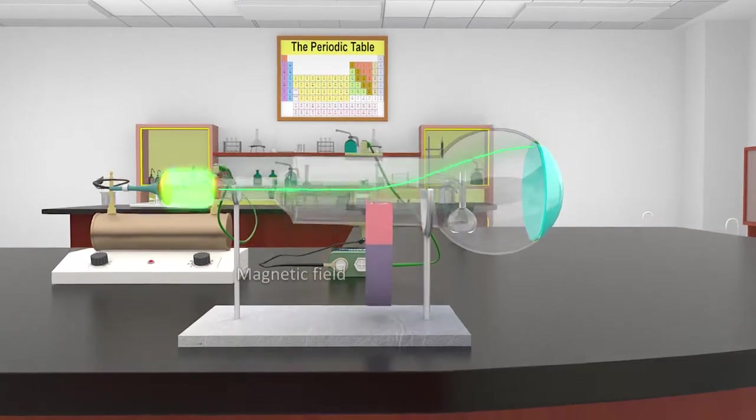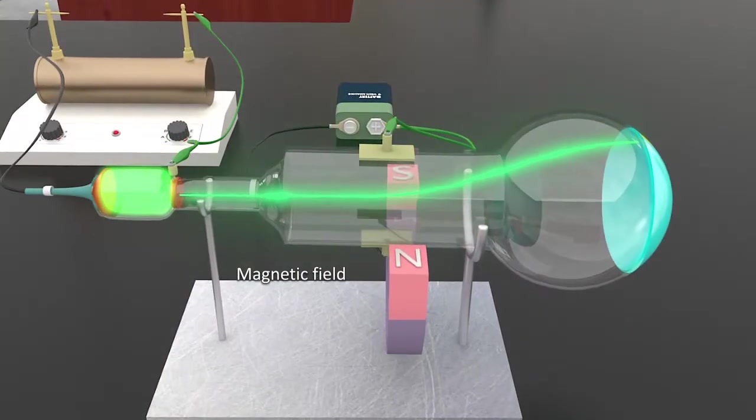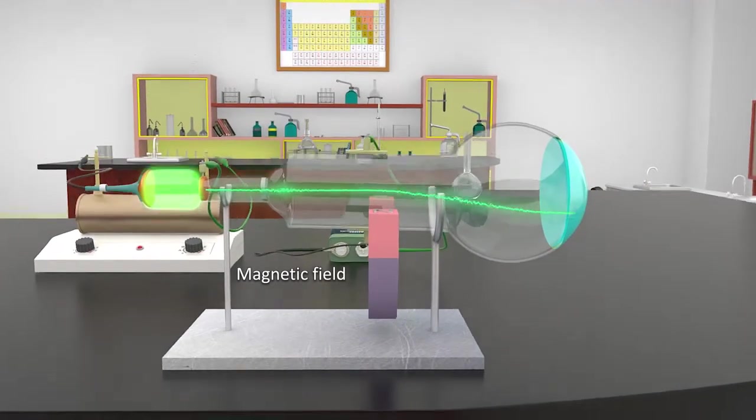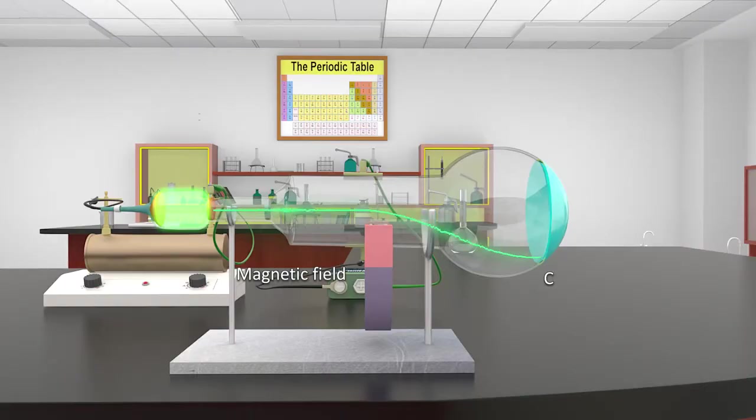Similarly, when a magnetic field was applied, cathode rays were found to deviate from their normal path and strike the tube at point C.